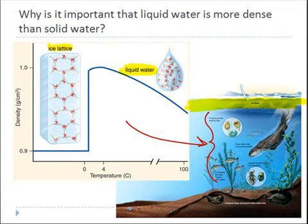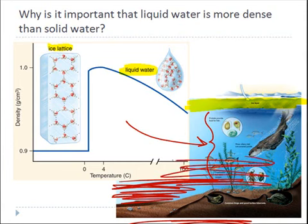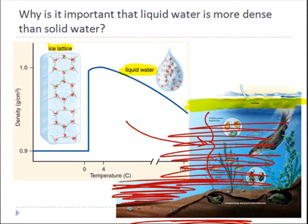If it were the reverse, if ice were denser, the ice would sink to the bottom, and then another layer of ice would sink to the bottom, and another layer, and another layer, and pretty soon all of the water would be frozen, and there would be no place left for living organisms to go, and they would die off in the winter. So another very important quality of water that's important for life on planet Earth.